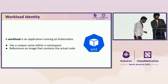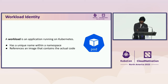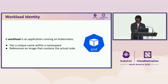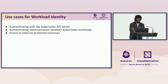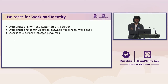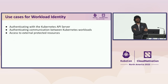Now jumping into workload identity in Kubernetes. First, let's define what a workload is. In Kubernetes context, a workload is an application running in a pod. A pod is a set of containers that contains the business logic. Each pod runs in a namespace, has a unique name, and has a service account tied to it. One use case for workload identity is the pod trying to authenticate with the Kubernetes API server.